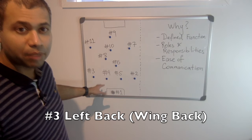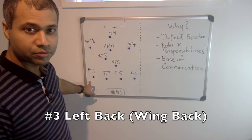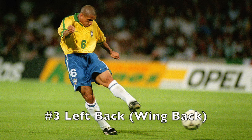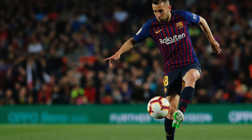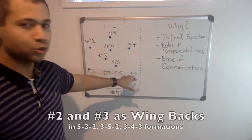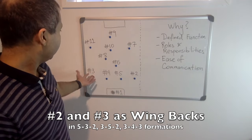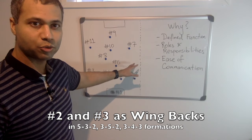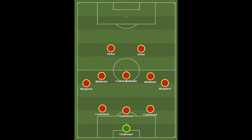The left back, or left wing back, is also called a number three. Some of the best number threes in the world have been Brazil's Roberto Carlos and more recently Barcelona's Jordi Alba. The number two and number three can be used as part of a four-man defense, but they can also be used in fairly advanced roles in a five-man defense, pushing further up the field.